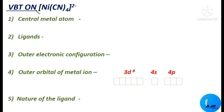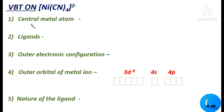VBT was introduced by Heitler and London, and it is primarily based on the concepts of atomic orbitals, electronic configuration of elements, the overlapping of atomic orbitals, and hybridization of atomic orbitals. I have chosen nickel tetracyanido nickelate ion and let us see how VBT explains it.